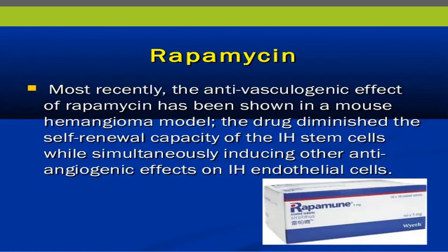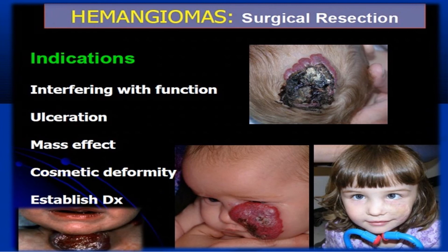Recently, rapamycin was introduced as a treatment for hemangioma. Its antivascular and antigenetic effects have been shown in a mouse hemangioma model. Rapamycin diminishes the self-renewal capacity of infantile hemangioma stem cells while simultaneously inducing anti-angiogenic effects on hemangioma endothelial cells. Surgical resection is indicated when hemangioma interferes with function — particularly eye or respiratory function — when ulcerated, when there is significant mass effect, or for cosmetic deformity.